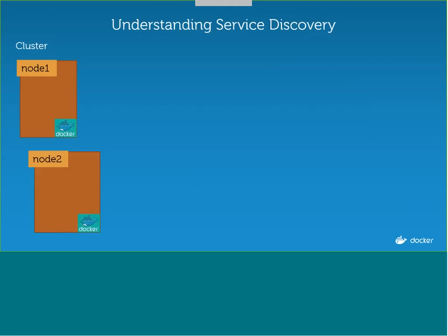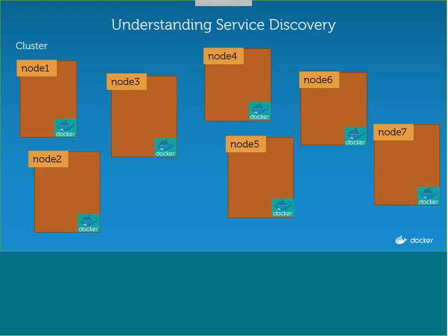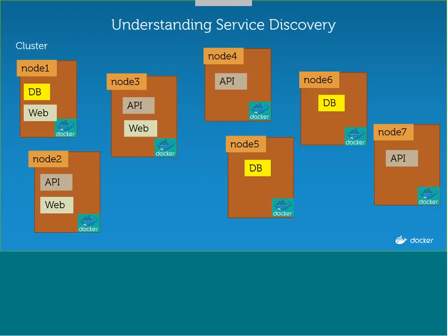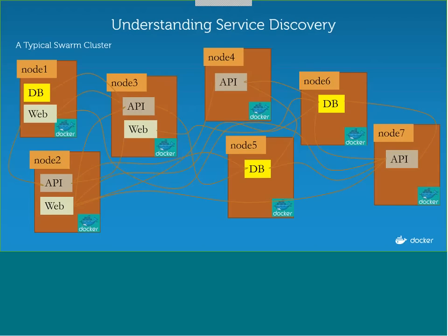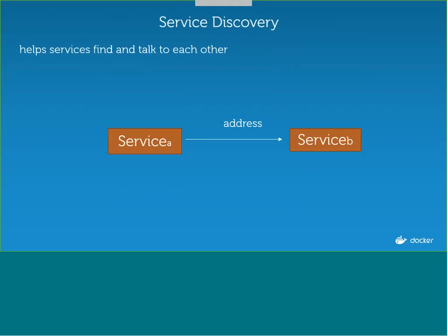Let's understand service discovery in a clearer way. Suppose you have a cluster — you start with setting up the nodes, node 1 and node 2, then build up more nodes in the swarm cluster. Then you bring about a front-end, your front-end is talking to the APIs, and at the end of the day each container running inside your cluster is talking to each other. Before 1.12, we used to do embedded DNS which was a kind of complicated process. But with 1.12, it has become very easy. At the end of the day, service discovery just helps services find and talk to each other. Service A is the front-end and service B is the back-end — service A has to know the address where service B sits. This is where embedded DNS and load balancing features come into the picture.